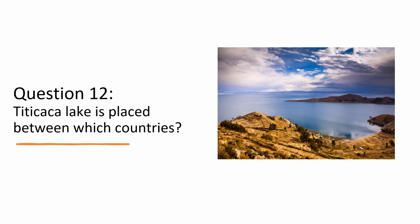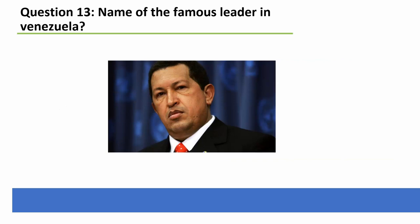Peru was the center of the mighty Inca Empire from 1438 until the Spaniard Francisco Pizarro arrived in South America in 1532. Peru declared its independence on July 28, 1821, thanks to José de San Martín's Argentine army and Simón Bolívar's Venezuelan army. Bolívar was named Liberator of America and was born in Caracas. So what is the name of the famous leader from Venezuela? And the answer is Hugo Chávez.